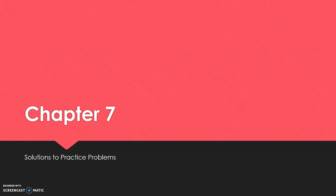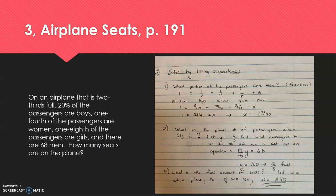Let's go ahead and look at the solutions to the Chapter 7 practice problems. The first question that we were asked to explore is number three, airplane seats.